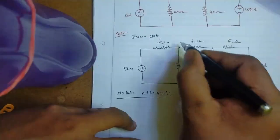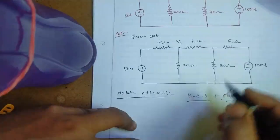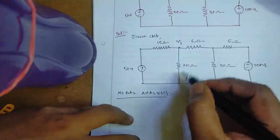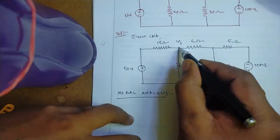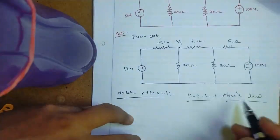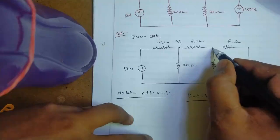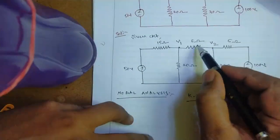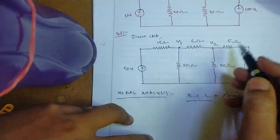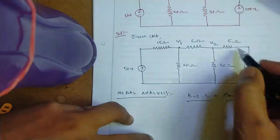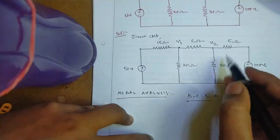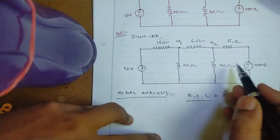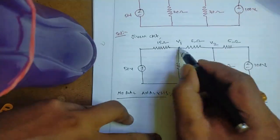We identify this as a basic node and name it V1. For this node we have three branches: one, another one, and a third one — three new branches connected to it. Next, we take this as another basic node and name it V2. For V2, new elements are the combination of 5 ohms and 100 volts, and 3 ohms. All elements are assigned to node 1 and node 2.